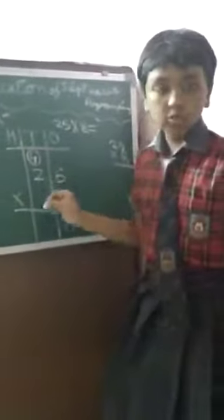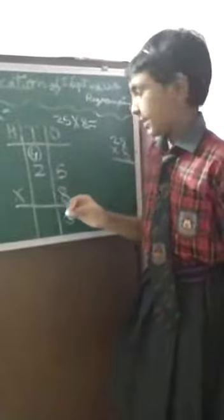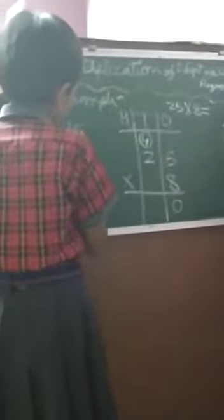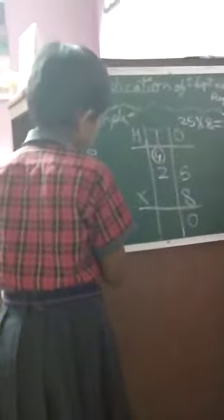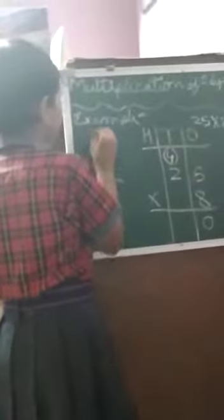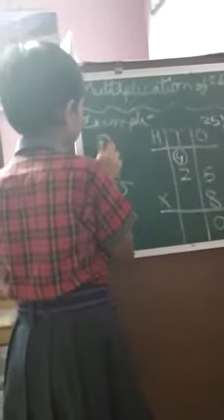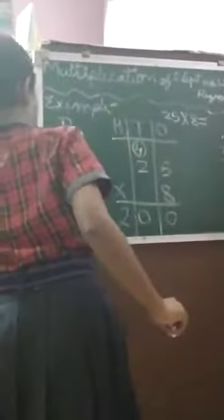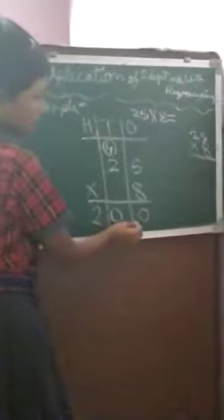Now, 8 into 2 or 2 into 8 is 16. So 16, 16 plus 4 is 20. So we are going to get 20. And the answer we got is 200.